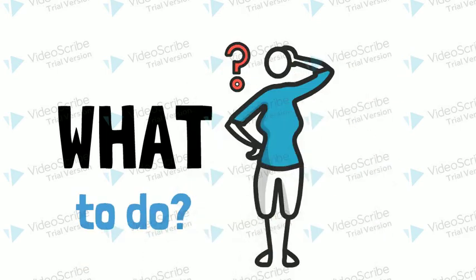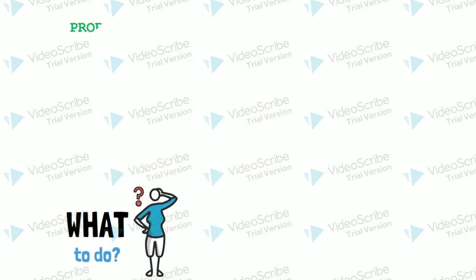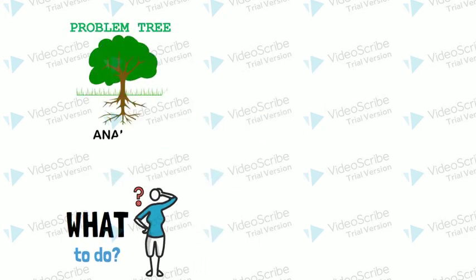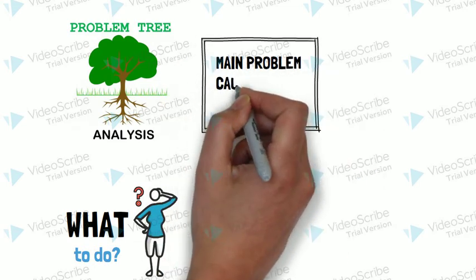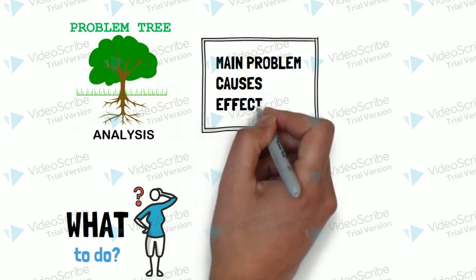Project managers have used this technique called problem tree analysis. Using the problem tree analysis, they are able to come up with the main problem, causes, and its effects.